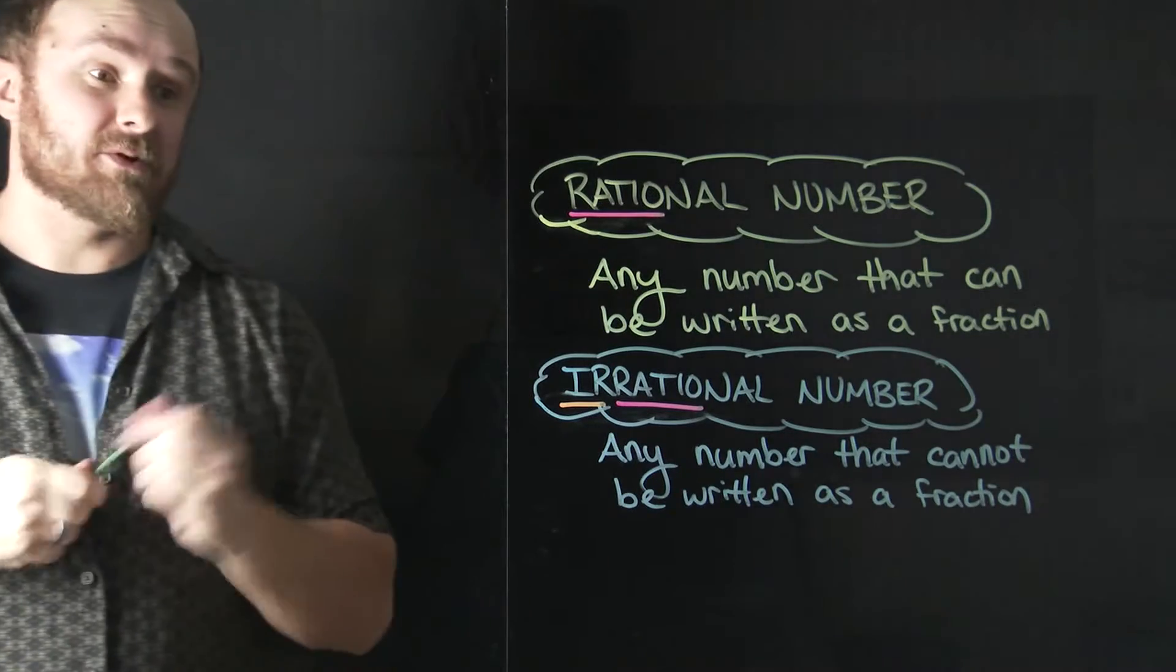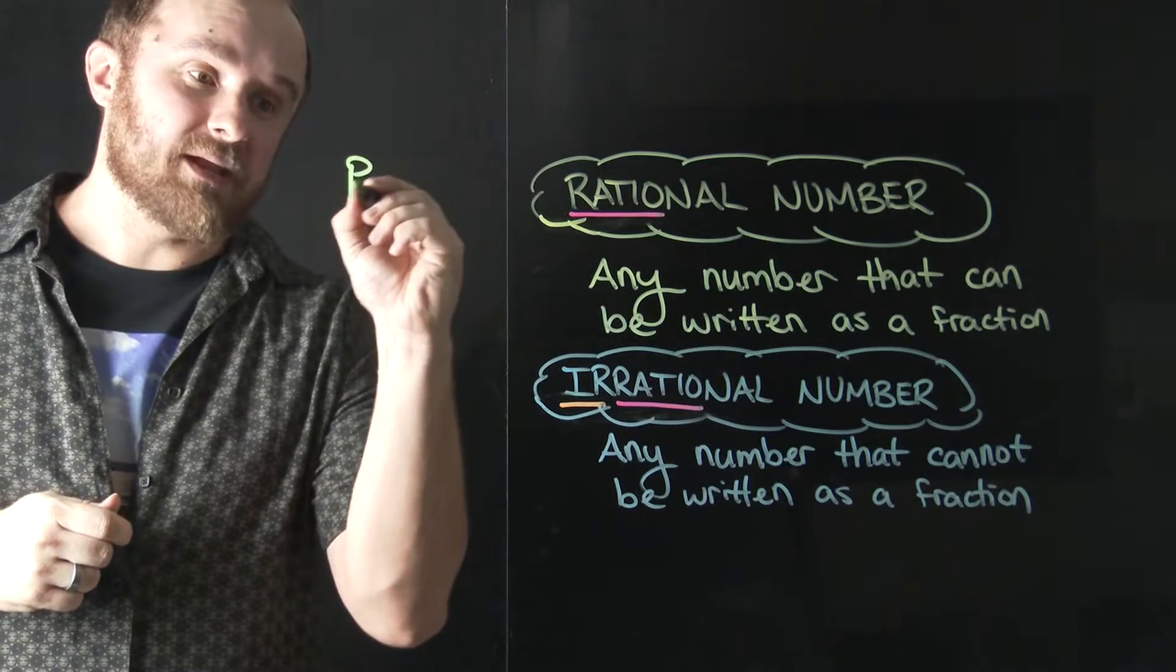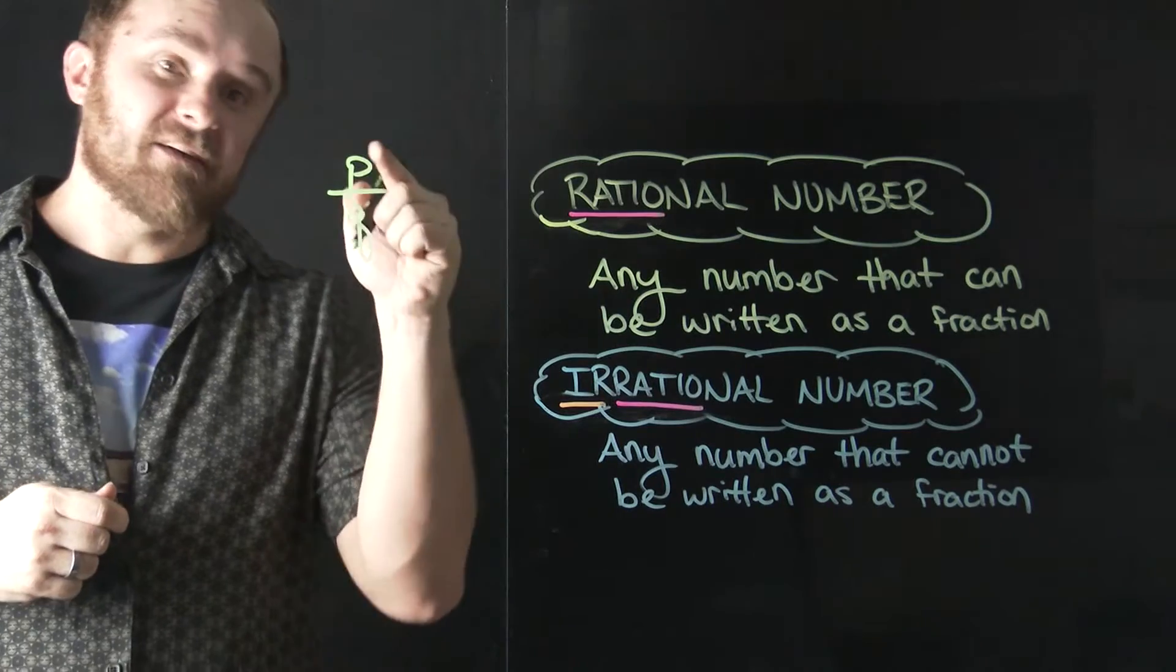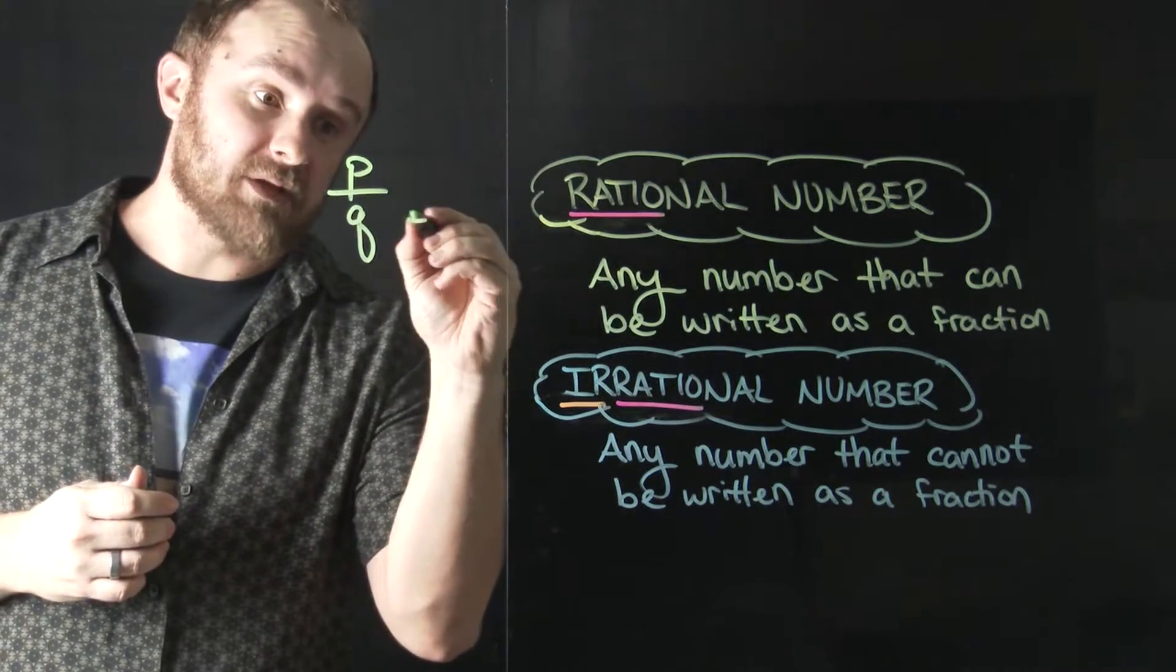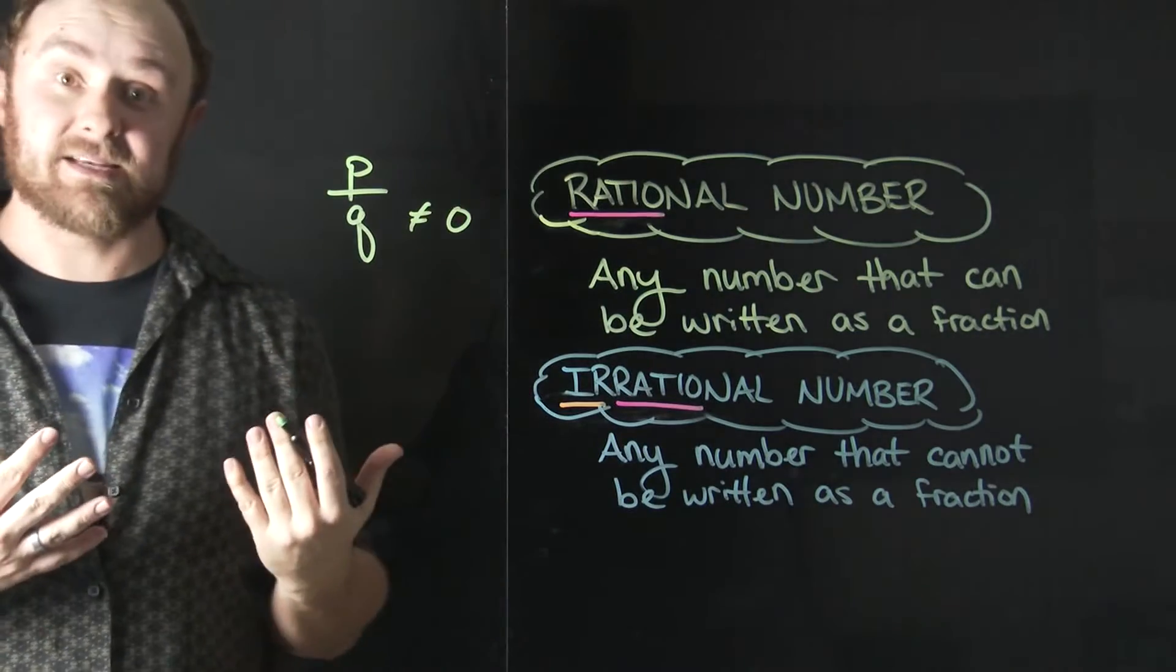If you remember from last time, a rational number is simply any number that can be written as a ratio of p divided by q, where both p and q are integers. But remember, q cannot equal zero because you can't divide by zero.